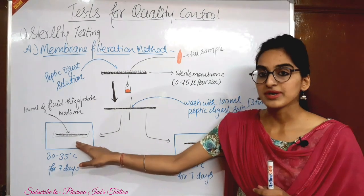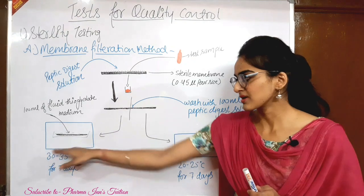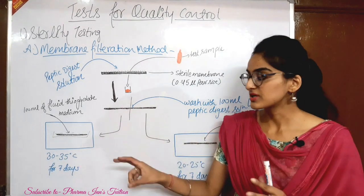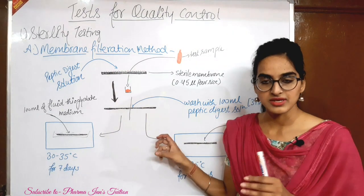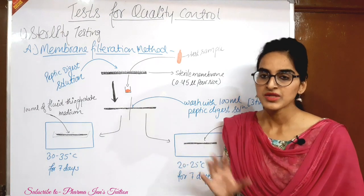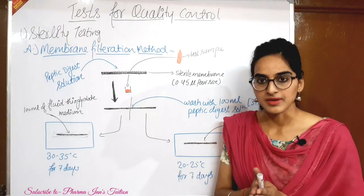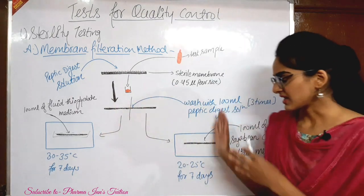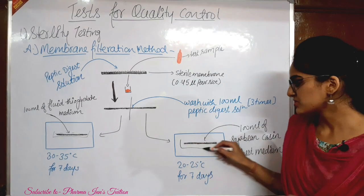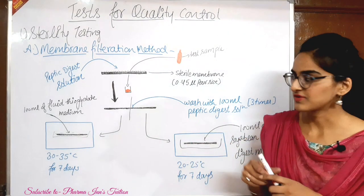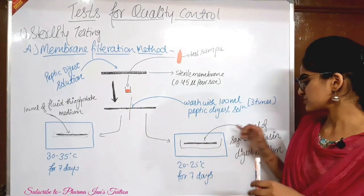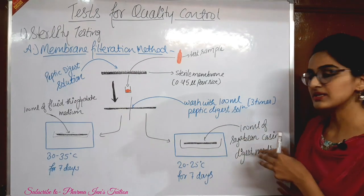We close it in an incubator — I have shown an incubator with the blue box. In the incubator, we will keep it at 32–35 degrees Celsius for approximately 7 days. Then we move to the second membrane part.